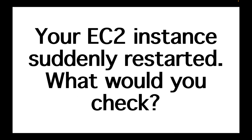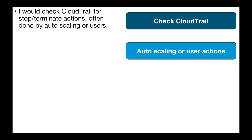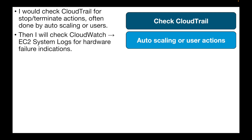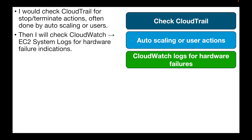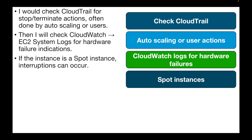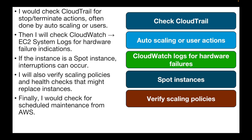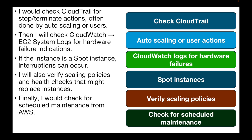The next question is: your EC2 instance suddenly restarted. What would you check? Check CloudTrail for stop or terminate actions, often done by an Auto Scaling Group or user-initiated. Then check CloudWatch logs for any hardware failure indications in your EC2 system logs. If the instance is a Spot Instance, interruptions are expected. Verify scaling policies and health checks that might have replaced the instance. Finally, check for scheduled maintenance from AWS — if it's a very old instance, AWS may plan maintenance such as terminating or upgrading the instance.